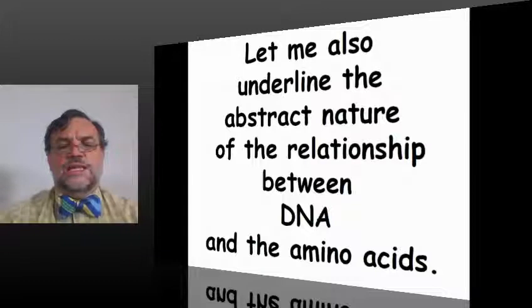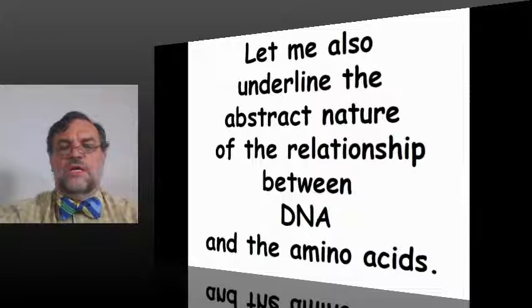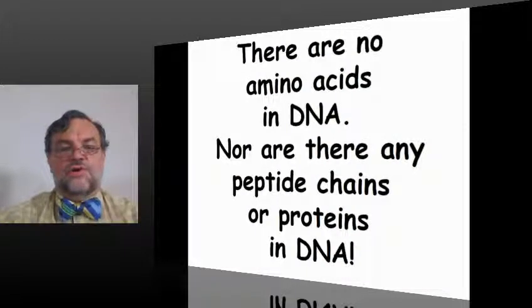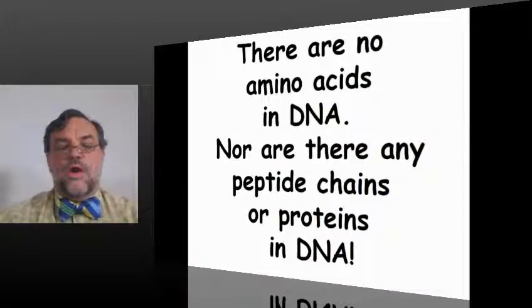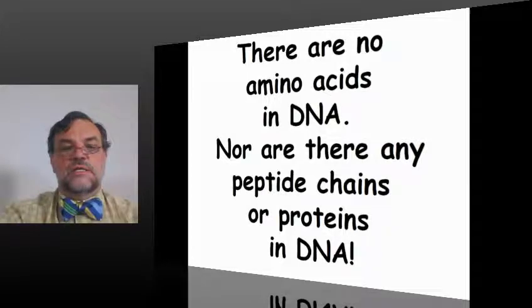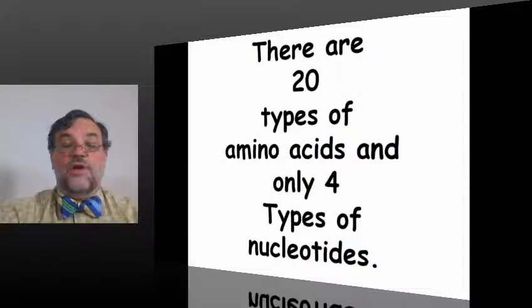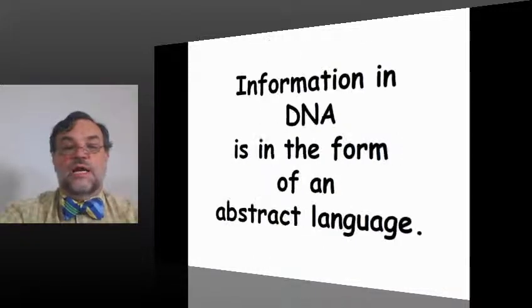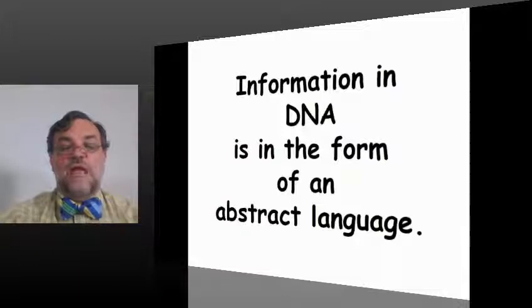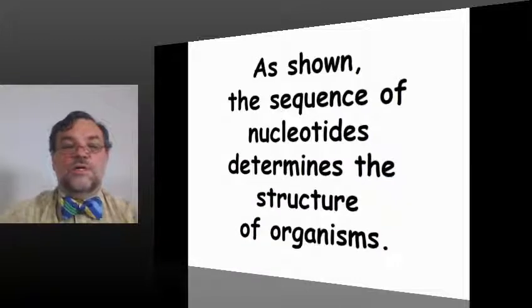Perhaps some of the most important things we can say is to underline the abstract nature of the relationship between DNA and the amino acids. Abstract: there are no amino acids in DNA, nor are there any peptide chains or proteins in DNA. There are 20 types of amino acids and only four types of nucleotides. Information in DNA is in the form of an abstract language. As shown, the sequence of nucleotides determines the structure of organisms.